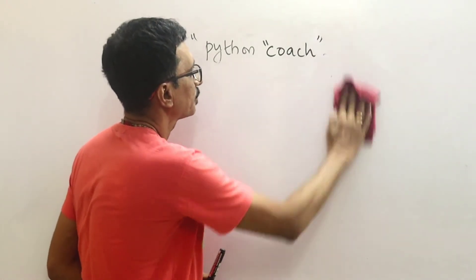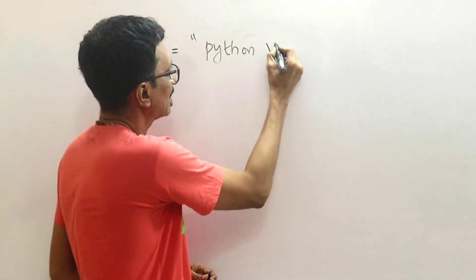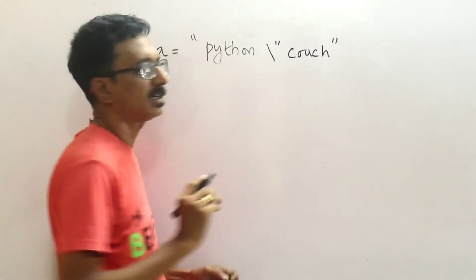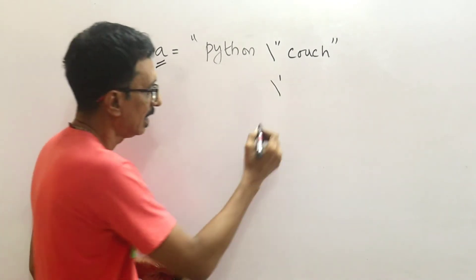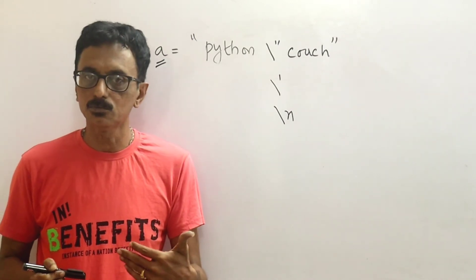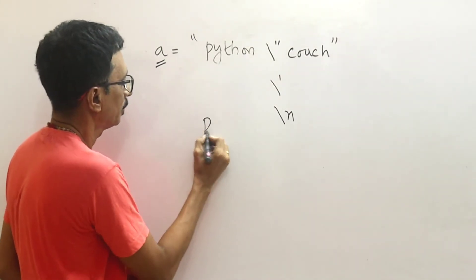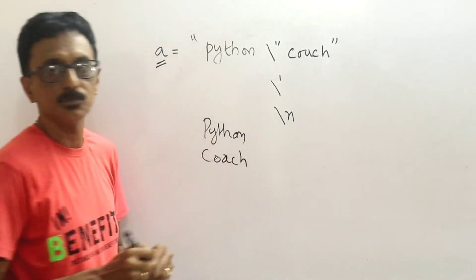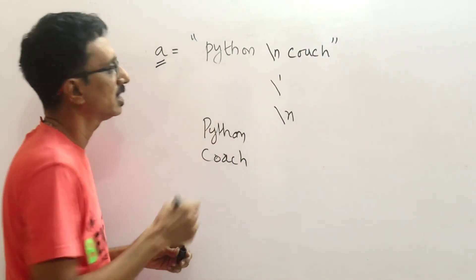If you have a single quote inside a double-quoted string, that's fine. If you say the alphabet with a single quote, new line is automatically added with the escape sequence '\n'. Escape sequences like '\n' give a new line in the output.